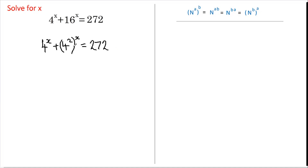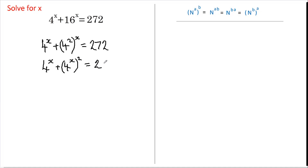Now when we have a number raised to a power and that's all raised to another power, this rule allows us to either multiply those powers or swap the order of the powers. So this becomes 4 to the power of x plus 4 to the power of x, all raised to the power of 2. Let's swap those around — equals 272.